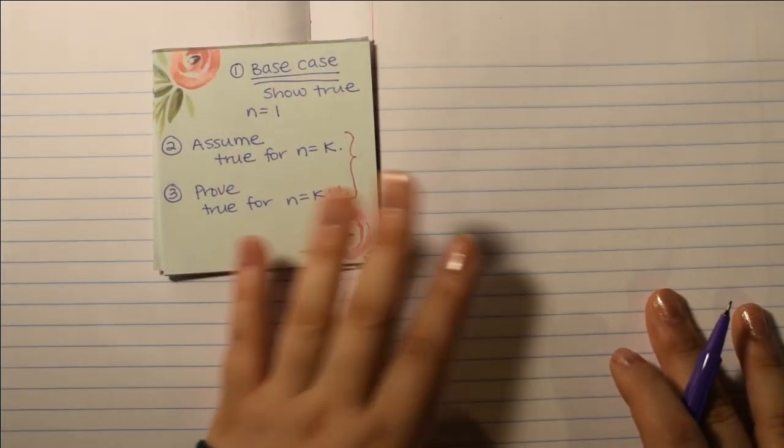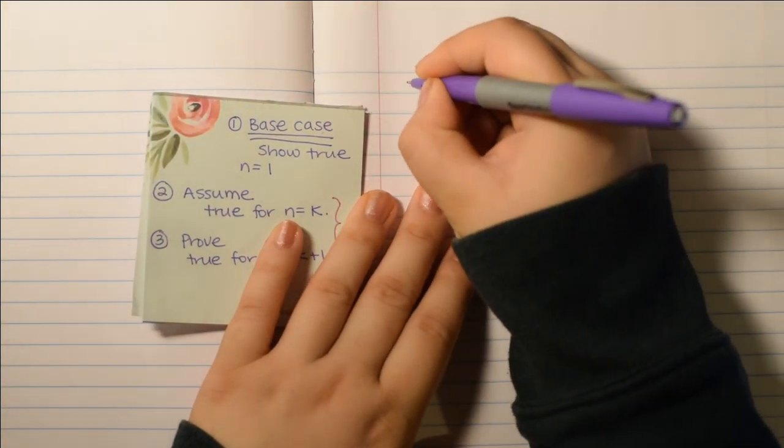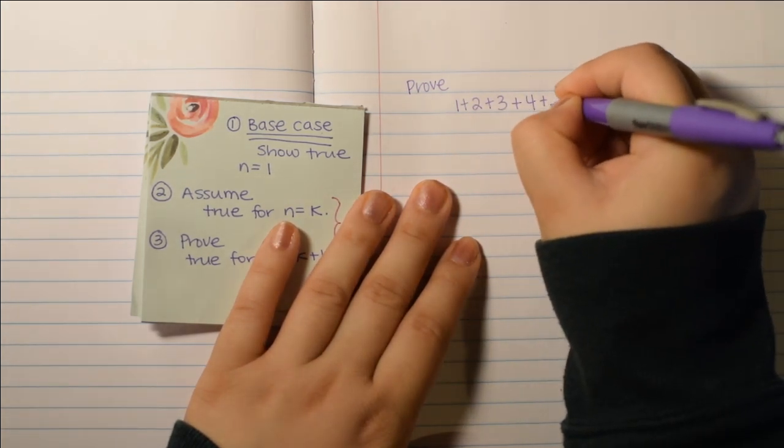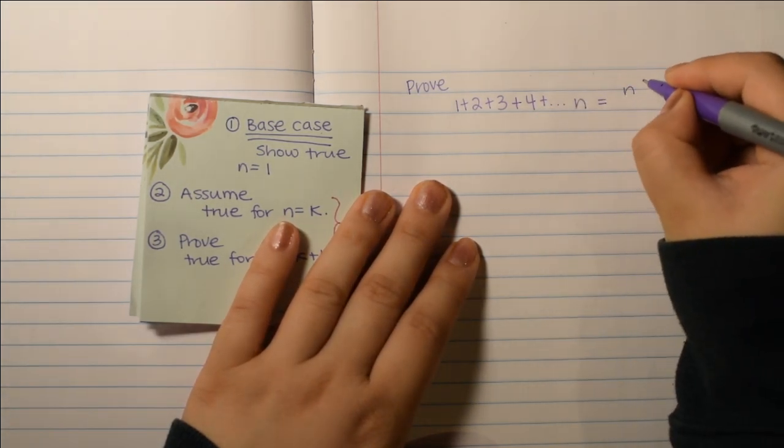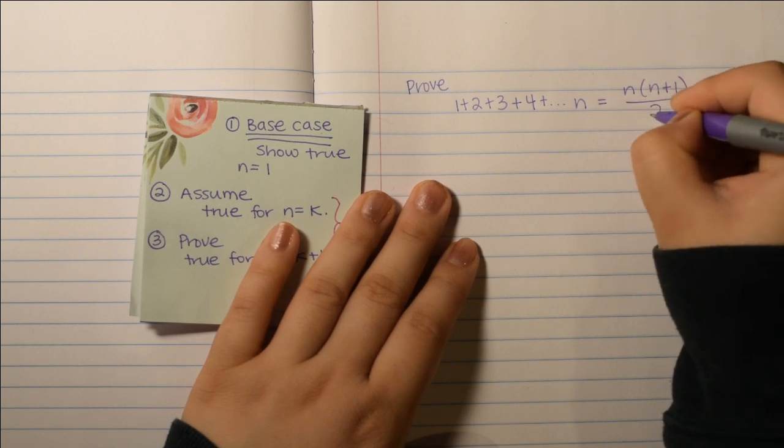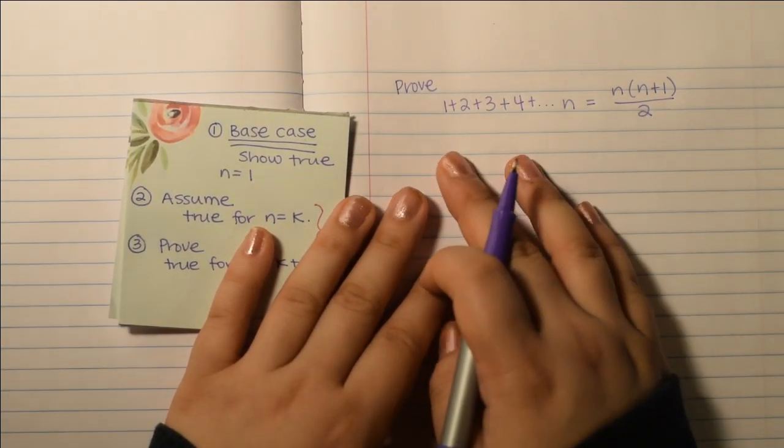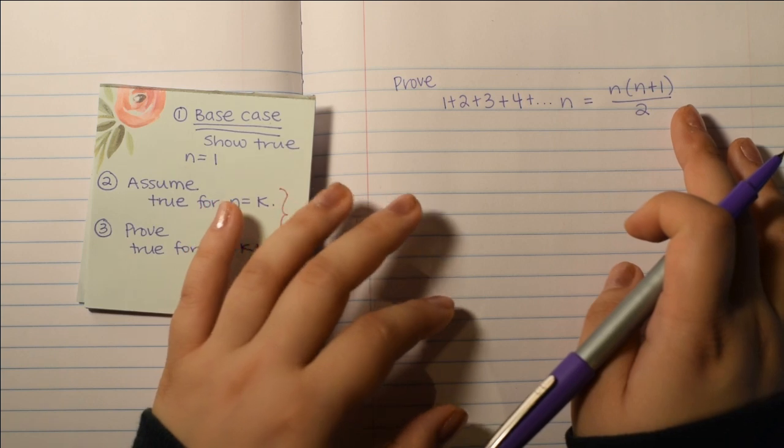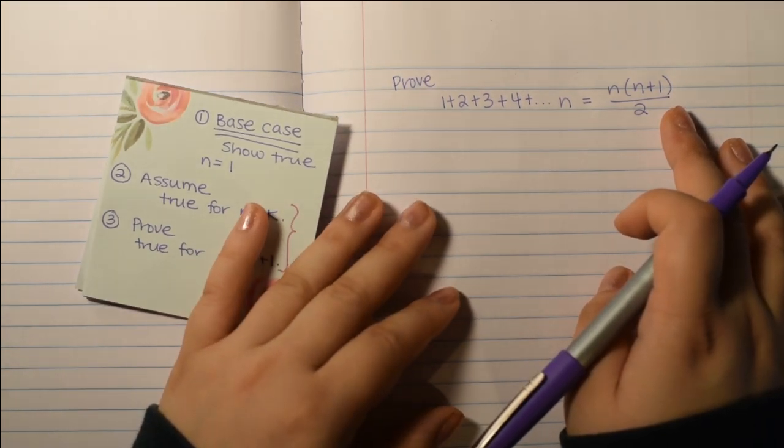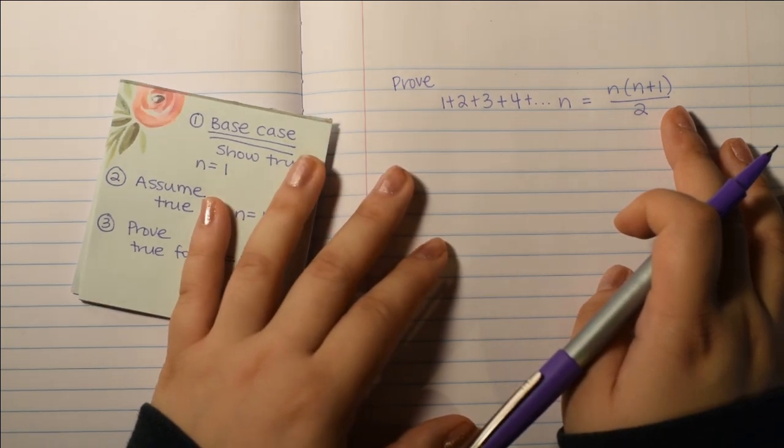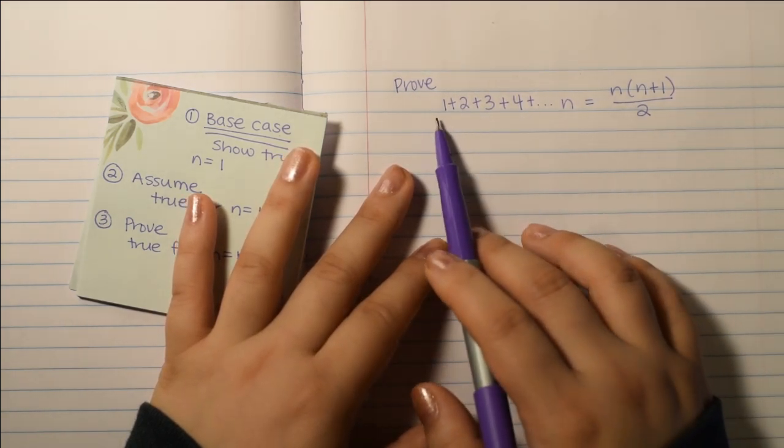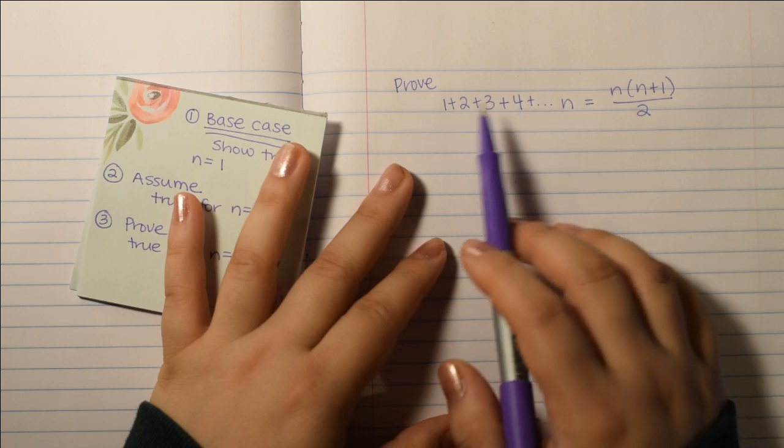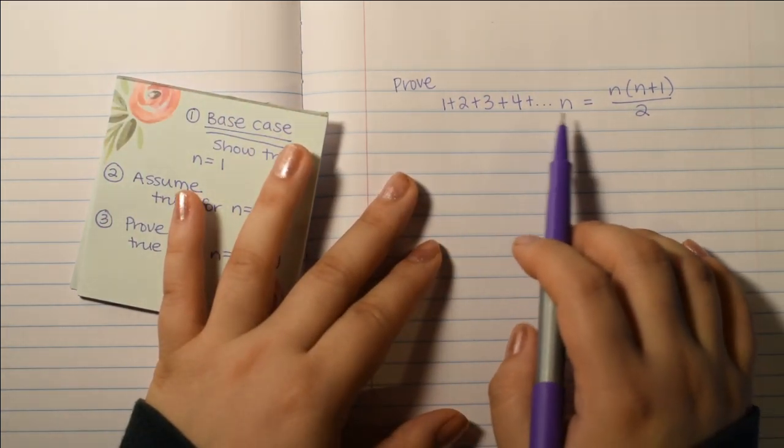Okay, so, let's try this for proving 1 plus 2 plus 3 plus 4 plus dot dot dot plus n equals n times n plus 1 over 2. And this is actually called Gauss's formula. Because when the famous mathematician Carl Friedrich Gauss was a young boy, he was asked to add the integers from 1 to 100. So, when n equals 100, the natural numbers, right? The integers 1 plus 2 plus 3 plus 4 to n.